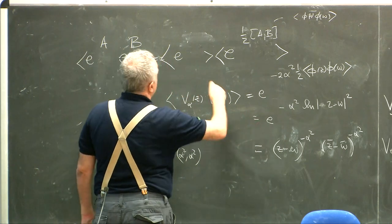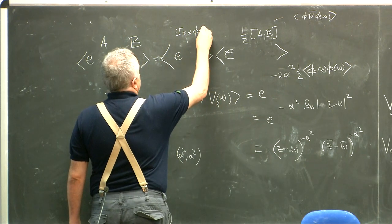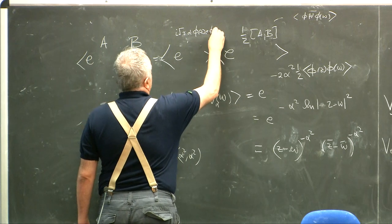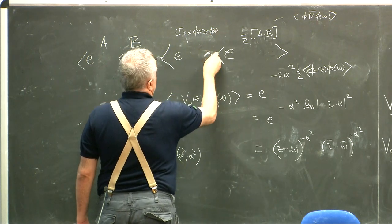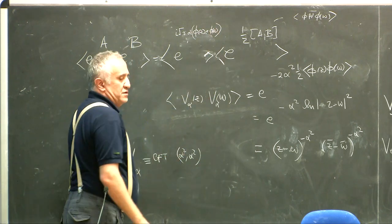i times 2 alpha phi of z plus phi of w. That will be a constant.